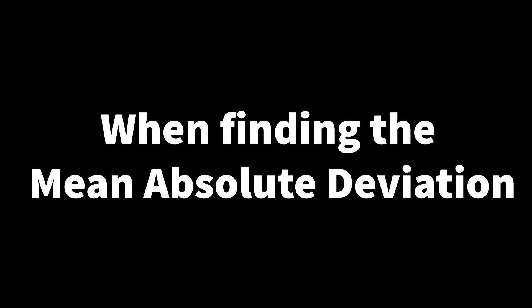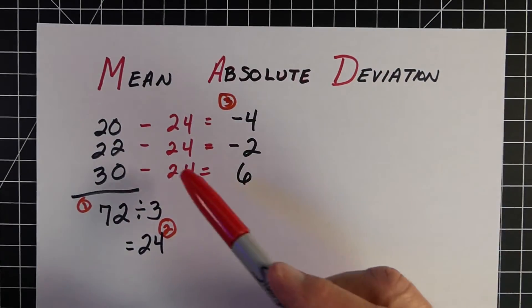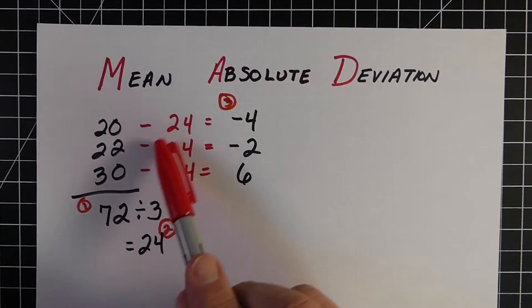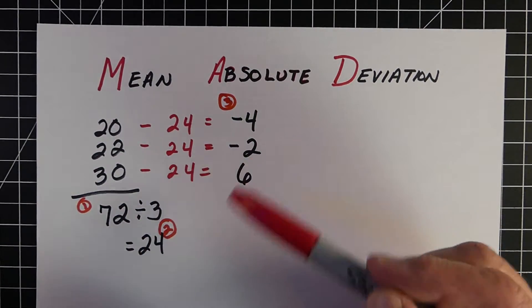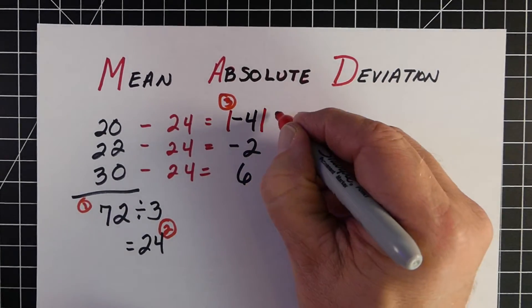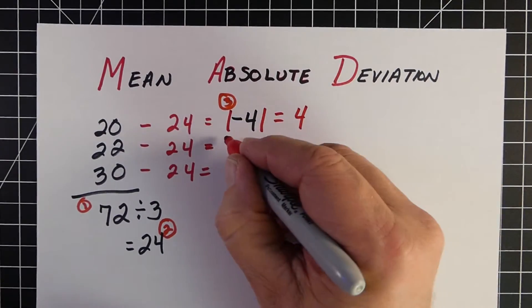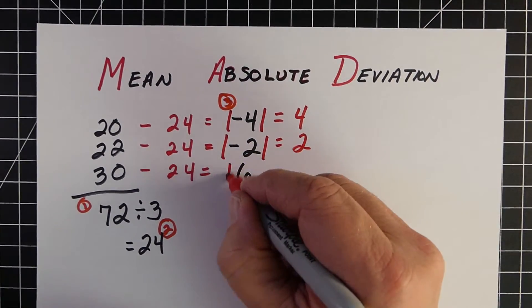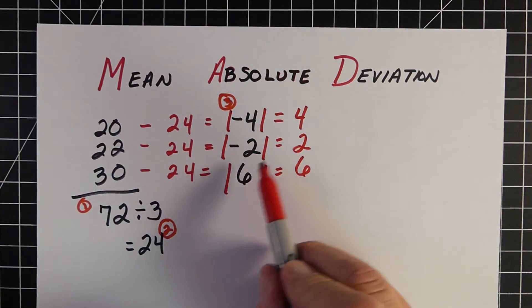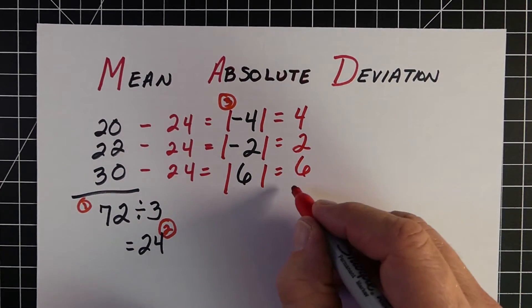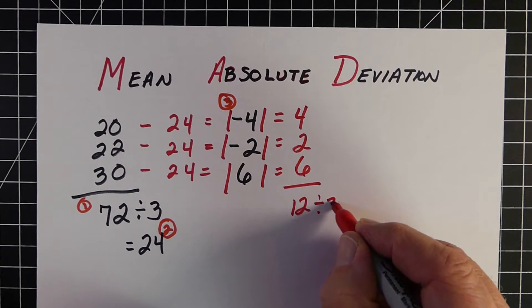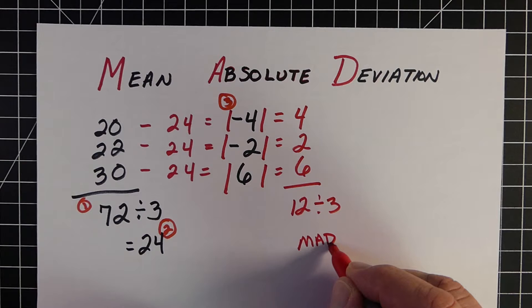Next, we're going to look at mean absolute deviation, which is a problem we do in middle school. I've already added the numbers up — got 72 divided by 3 and got 24 as my mean — and I subtracted the mean and got these numbers. Now I want to find the absolute value of each: the absolute value of negative 4 is 4, absolute value of negative 2 is 2, and the absolute value of 6 is 6. I add these up to get 12, divide by 3, and so my mean absolute deviation would be 4.